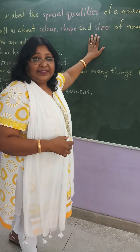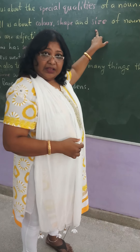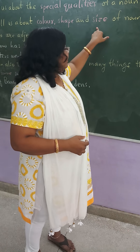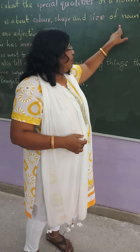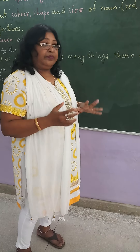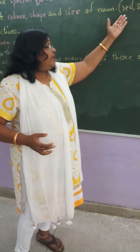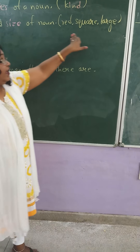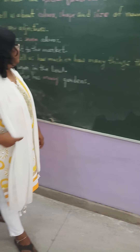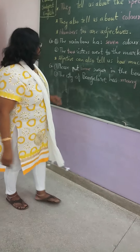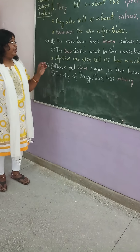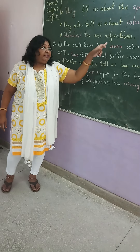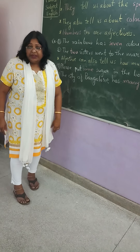Describing words also tell us the size — big or small. What is the size of a noun? Like large, small, square — all these are also describing words. So, describing words are also called adjectives. Adjective is the describing word.